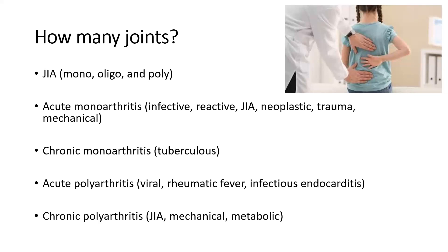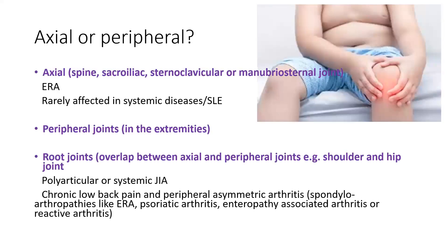Acute polyarthritis with multiple joint involvement includes rheumatic fever (migratory), viral arthritis, and infective endocarditis — typically shorter in duration. Chronic polyarthritis can be mechanical, metabolic, vasculitic, or due to JIA. Assess for axial involvement — affecting the spine, sacroiliac joints, sternoclavicular, or manubriosternal joints — which is seen most commonly with enthesitis-related arthritis, and rarely with systemic JIA or SLE.